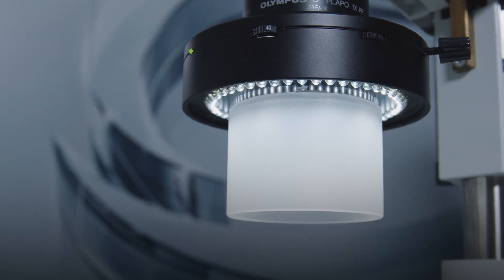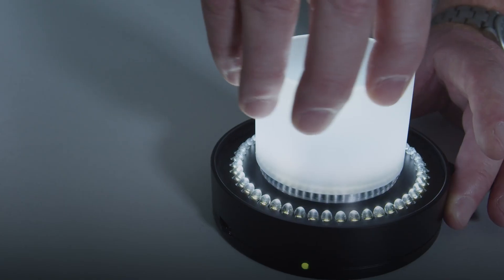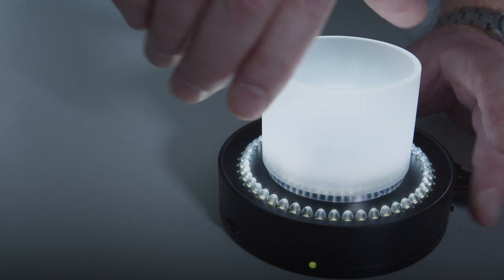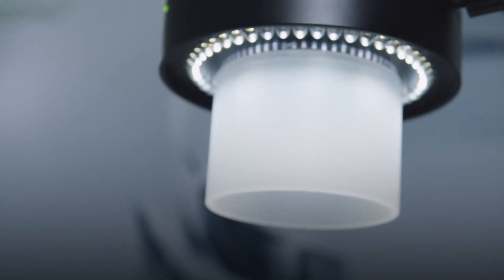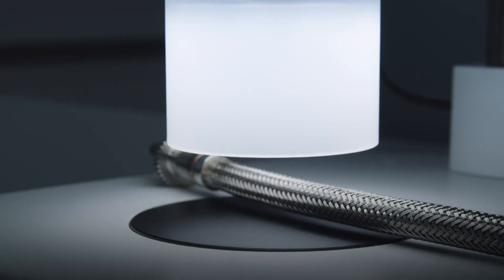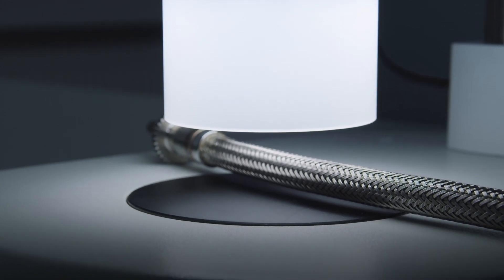This is where our tubular diffuser comes in. You can simply screw the Schad tubular diffuser into the internal thread of our EasyLED ring lights. The LEDs of the ring light then shine from the outside onto the tube and generate a highly diffused light inside, which strikes the sample non-directionally.